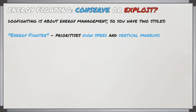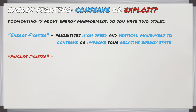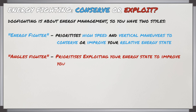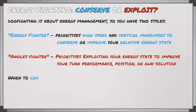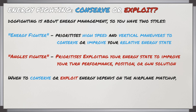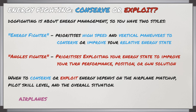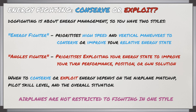You can act as what's classically called an energy fighter — prioritizing high speed and vertical maneuvers to conserve or improve your relative energy state. Then there's the angles fighter, who prioritizes exploiting their energy state to improve turn performance, position, or achieve a gun solution. Whether you conserve or exploit your energy depends on the airplane matchup, skill level, and the overall situation, and you're not restricted to fighting in only one of these styles.